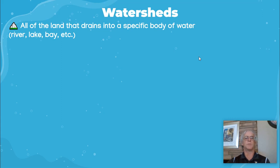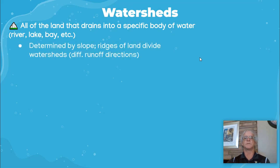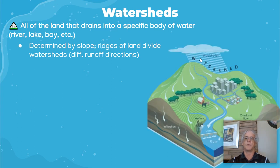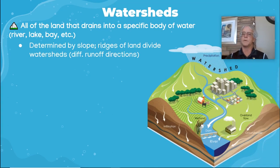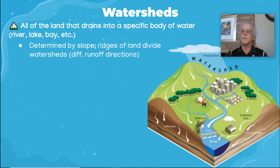For example, the LA River versus the San Gabriel River — both of those have specific areas that drain into them. It's determined by slope; ridges of land divide the watersheds and different runoff directions. Here we have the slope coming down, we've got this watershed, and all this water comes into this particular watershed.